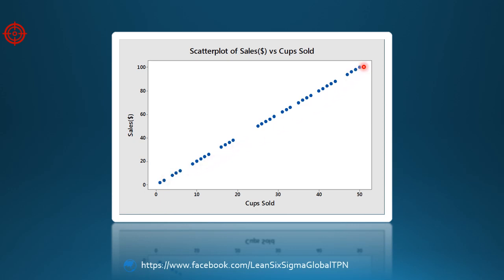On the graph, notice that all of the points fall directly on the regression line and that the correlation coefficient between the variables is 1.